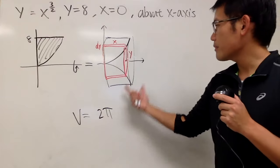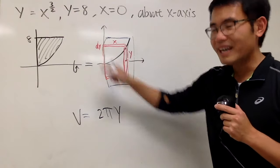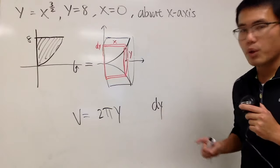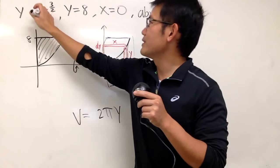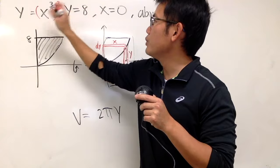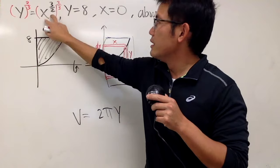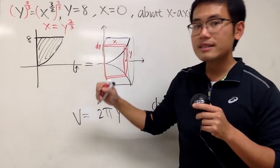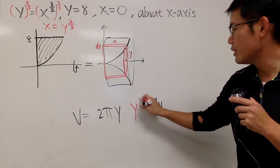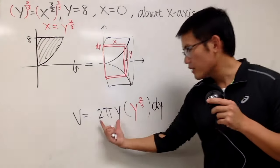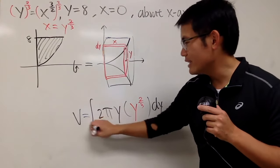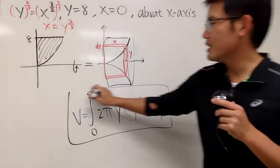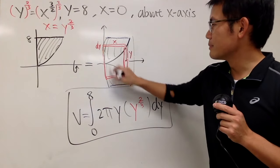The volume equals 2π times the radius y — we're in the y world, so that's good. Multiply by the height x. But x is not allowed in the y world, so go back and raise both sides to the 2/3 power: x = y^(2/3). Substitute that in for x. The integral runs from y = 0 to y = 8. This is the shell method giving us the volume.